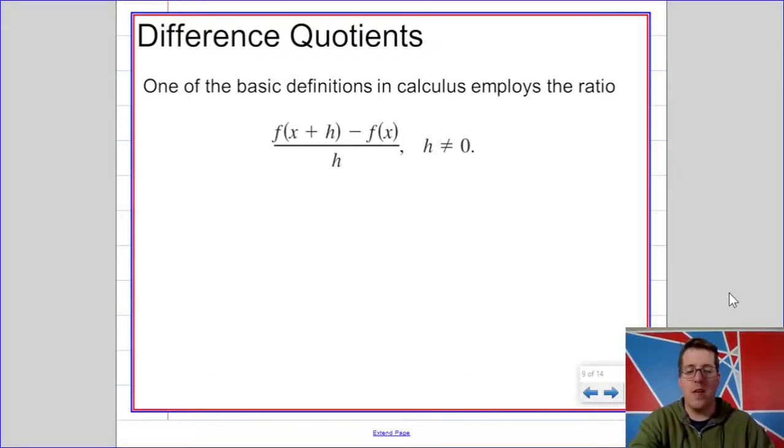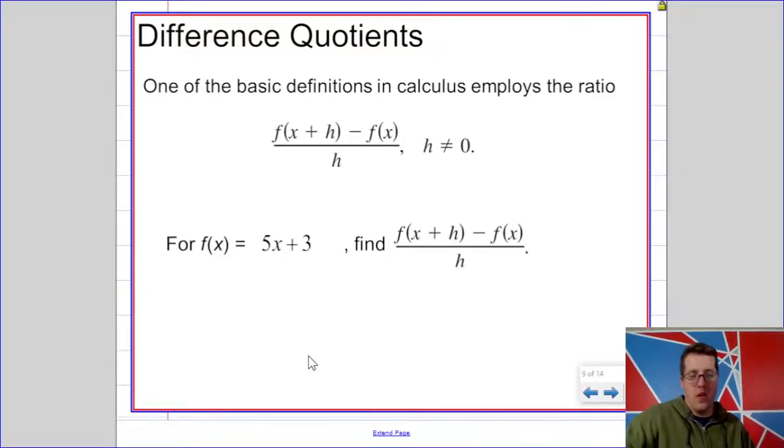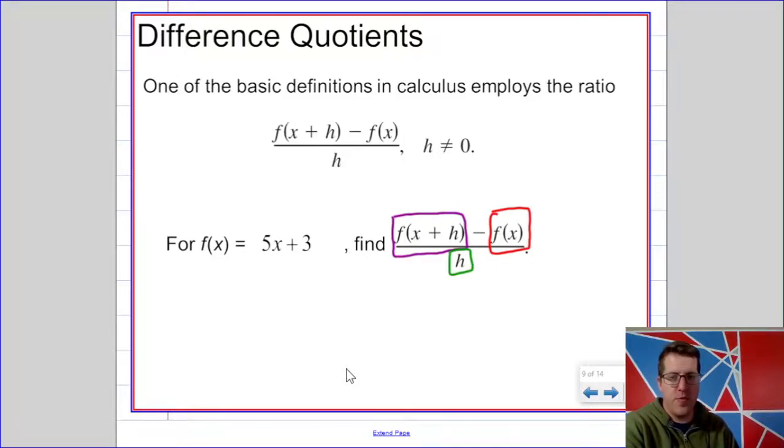Let's take a look at an example. Alright, our first example is using the function 5x plus 3, so a linear function. I'm going to color code this for you, so let's see if that helps. So the three parts of the difference quotient are the function evaluated at x plus h, the function evaluated at x, and h, the denominator.